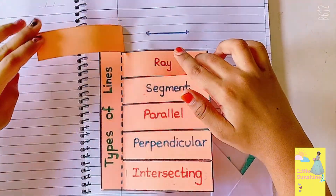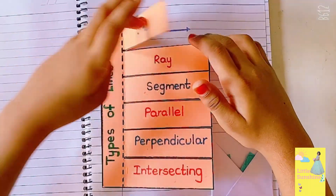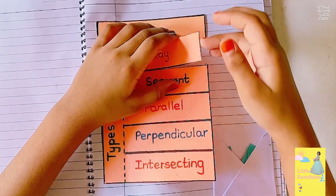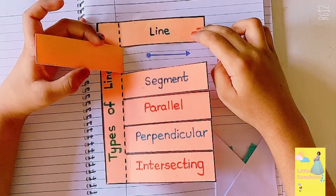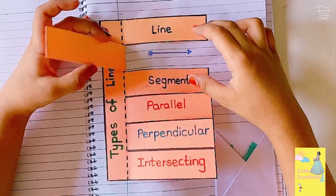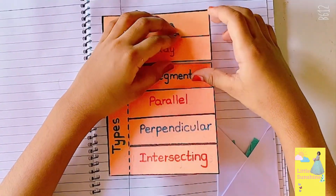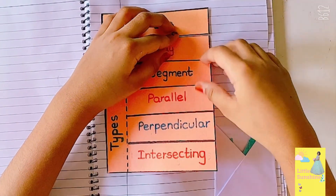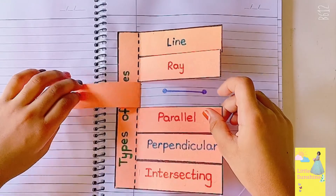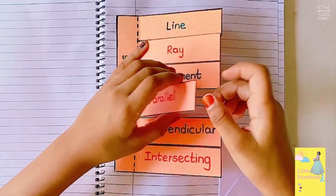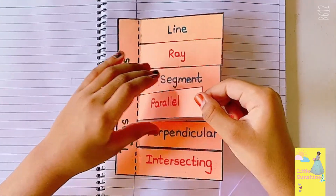Types of lines. Line, ray, segment, parallel.